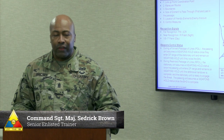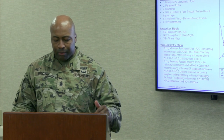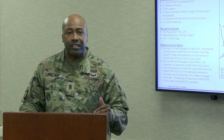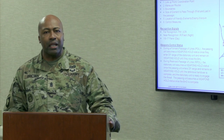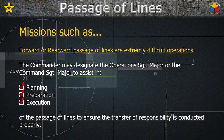During the conduct of any major operation, the Command Sergeant Major must position himself in areas that provide the best vantage point possible to reduce any levels of friction. Missions such as forward or rearward passage of lines are extremely difficult operations. The commander may designate either the Operations Sergeant Major or the Command Sergeant Major to assist in planning, preparation, and execution of the passage of lines to ensure the transfer of responsibility is conducted properly.